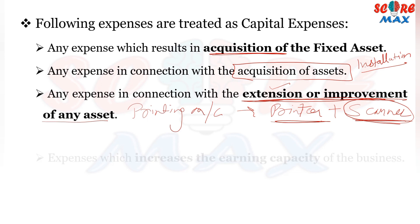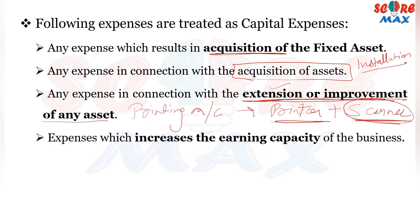The next type of capital expense is any expense which increases the earning capacity of the business. If our business's earning capacity increases due to that expense, it will be termed as capital expenditure.